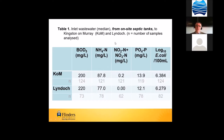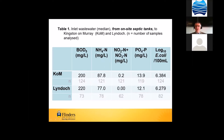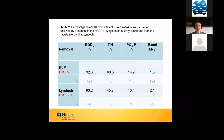One benefit of community wastewater management systems is that communities sign up to septic tank management, so the septic tanks are pumped out every four years — giving a very consistent effluent delivered to our systems. The influent coming from septic tanks at Kingston-on-Murray and Lindock is very consistent despite being separated by a couple of hundred kilometres. Looking at performance: the high-rate pond operates on a retention time of five days; the Lindock system's facultative pond operates on 30 days. The removal rates of BOD, total inorganic nitrogen, phosphorus, and log reduction values of E. coli are very similar — but the residence time is significantly reduced in the high-rate pond.